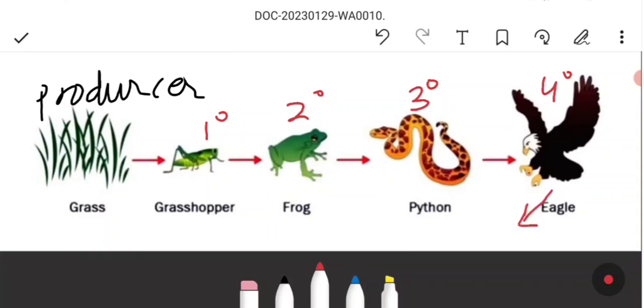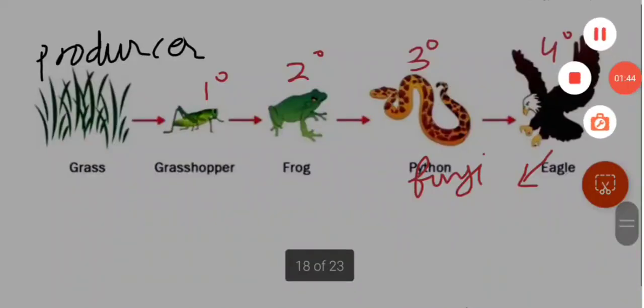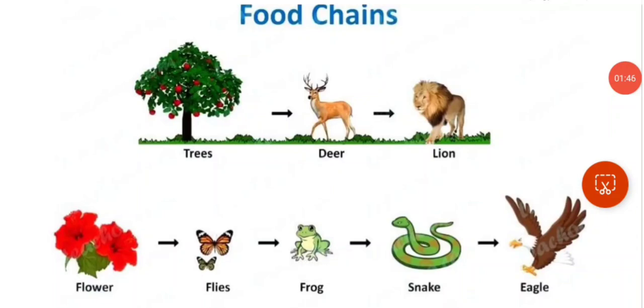Finally, when the eagle will die, the bacteria, fungi and microorganisms will decompose. So let us see more examples of food chain.